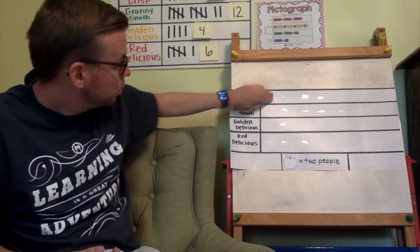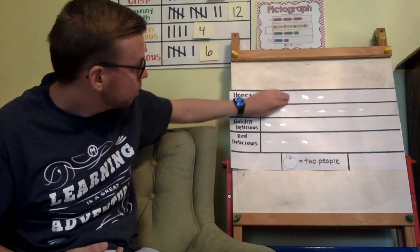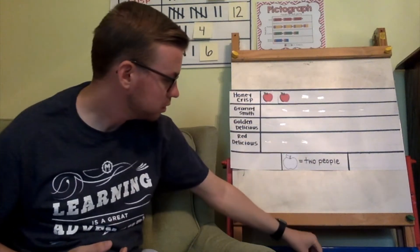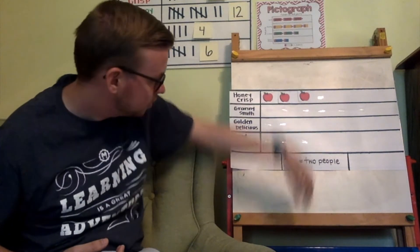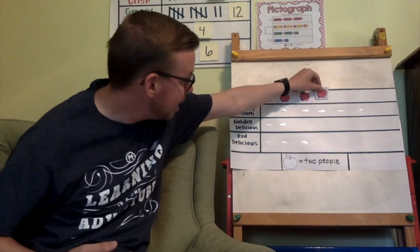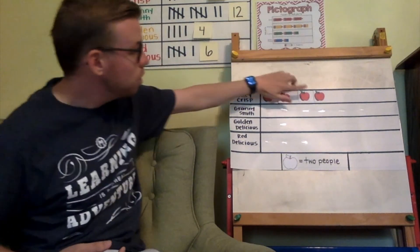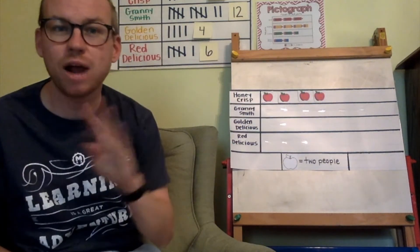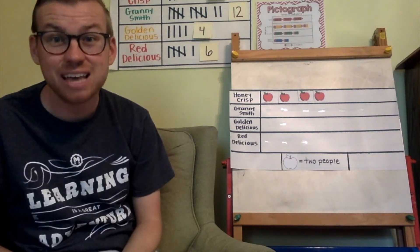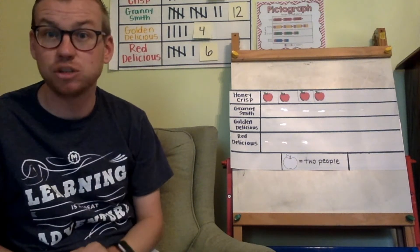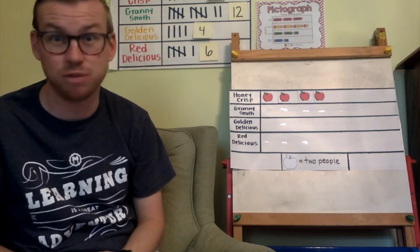Count by twos with me: two, four, six, eight. Only four apples are on the pictograph to show eight people. I can't have eight apples, because if I had eight that would be showing sixteen people voted, and only eight people voted Honeycrisp. Remember, if the key says one apple equals two people, then you have to count by twos.